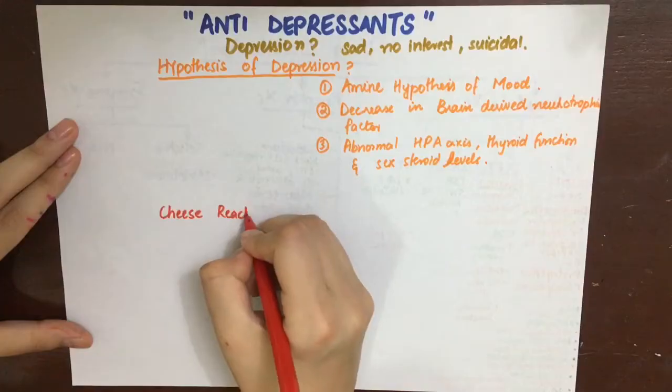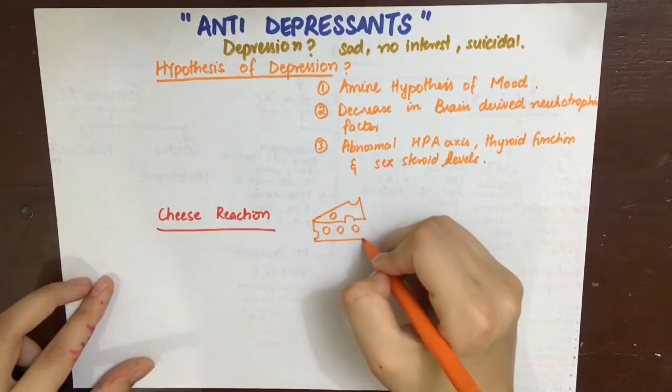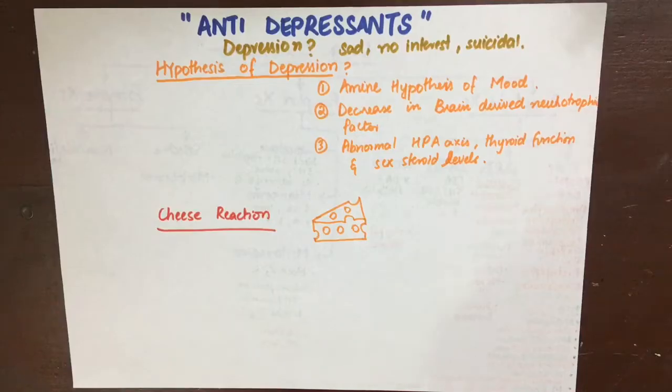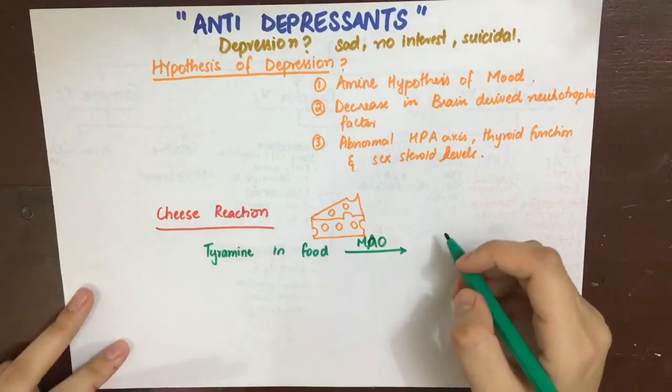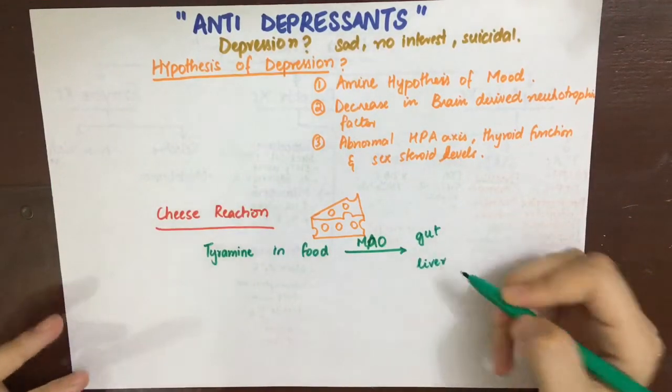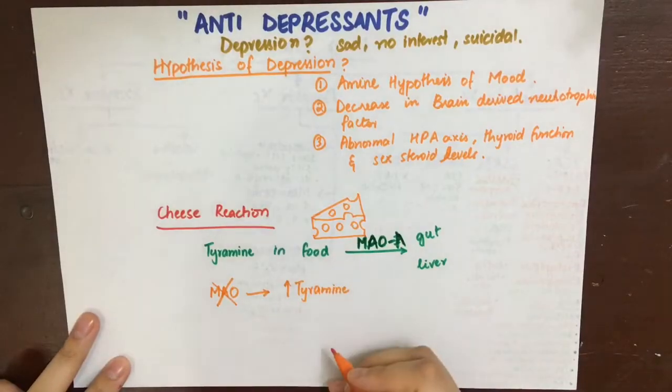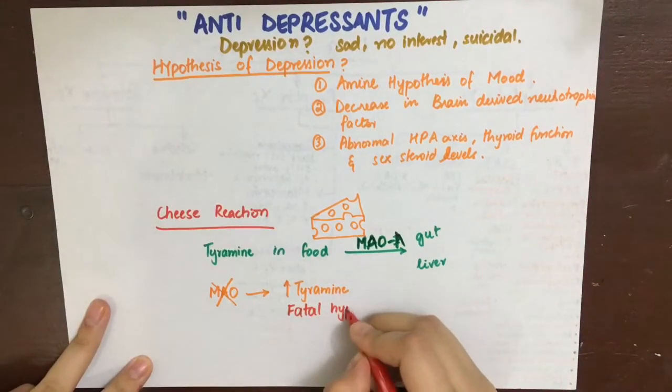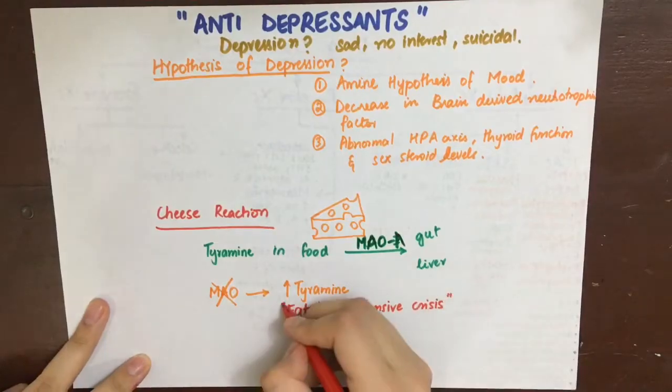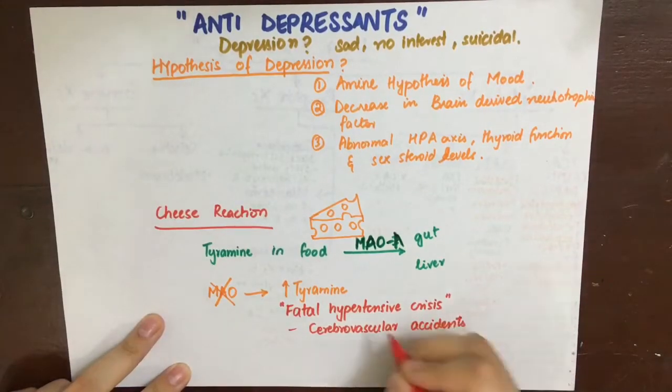Now an important concept to study before seeing the selective and non-selective MAO inhibitors is the cheese reaction. Now normally when we take food such as cheese and fermented food, what happens is that the tyramine present in the food is metabolized by the MAO present in the gut and liver. So very little of the tyramine will reach the general circulation. And that is good because tyramine is actually a releaser of catecholamines that are stored previously. So in cases where a patient is taking antidepressants such as MAO inhibitors and simultaneously takes food that are rich in tyramine, what happens is that the MAO are inhibited. So large amounts of tyramine will enter the general circulation and release large amounts of catecholamines and thus cause a hypertensive crisis and cerebrovascular accidents.